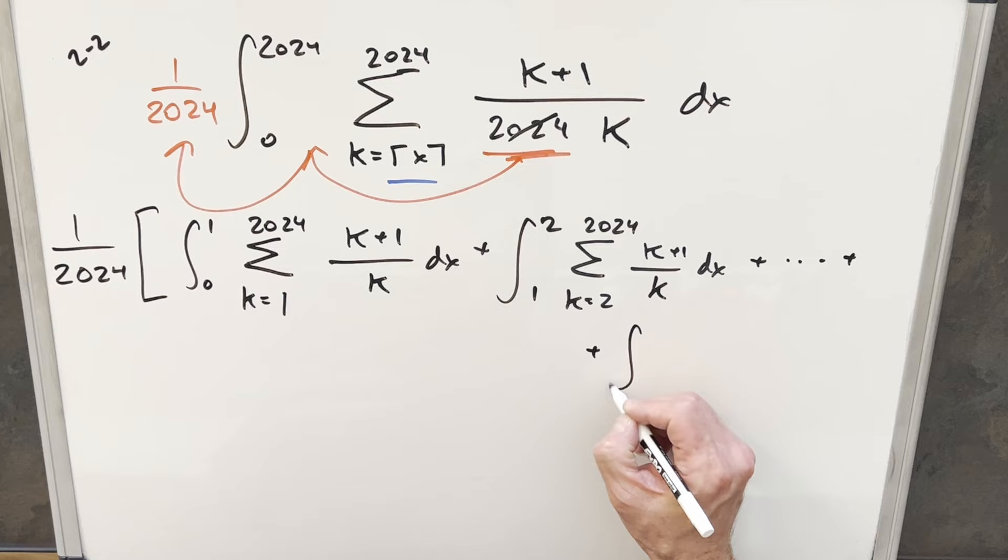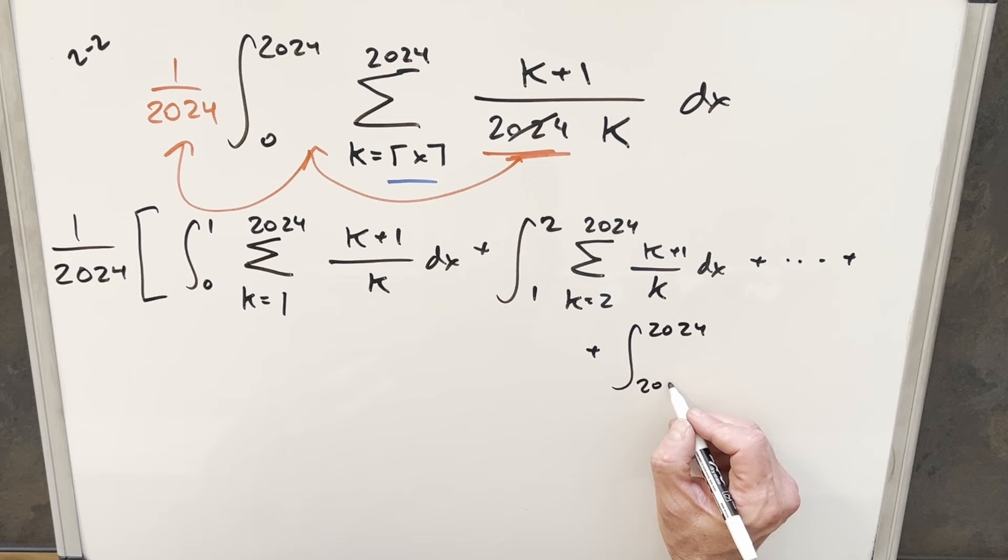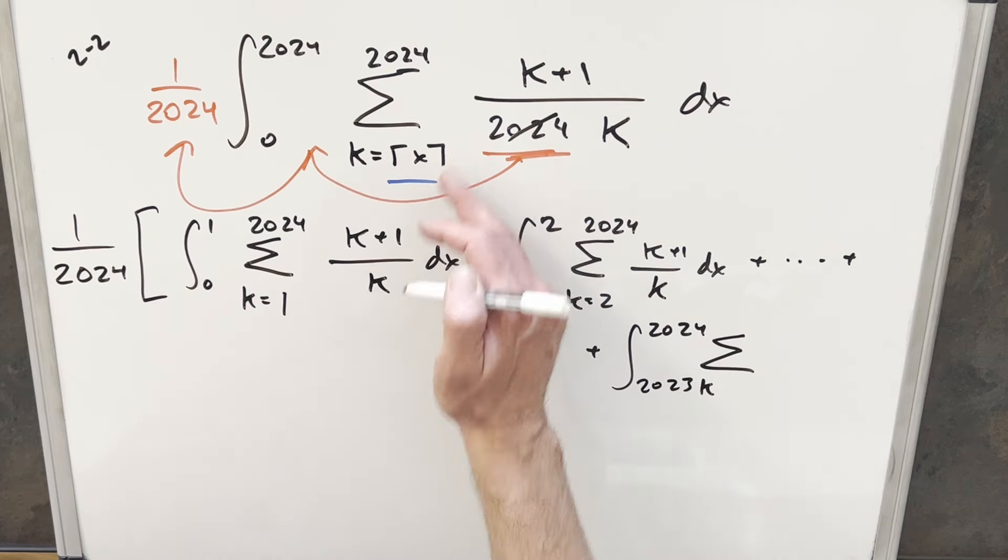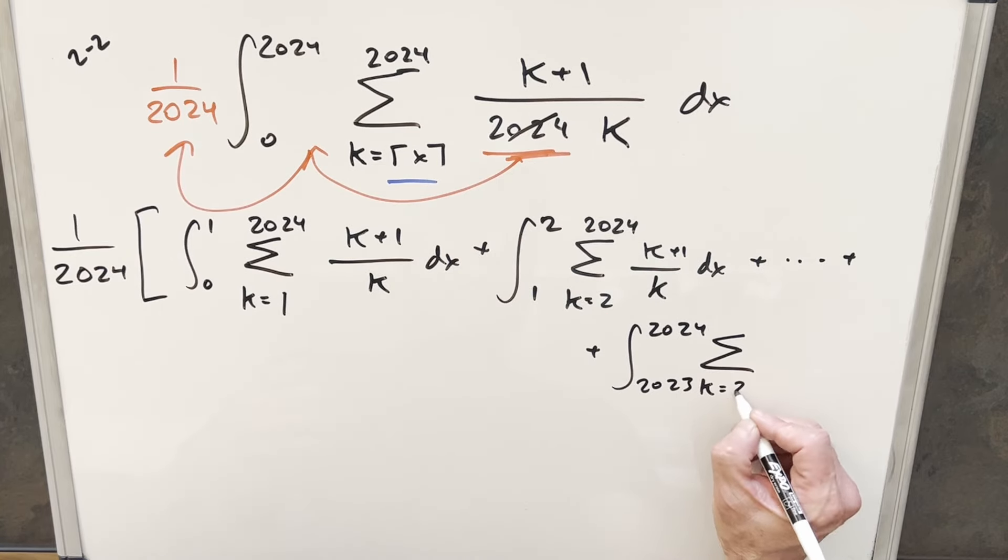So for this last integral here, our upper bound is going to be 2024. So this is going to be one less, or 2023. Now here for this k value, all of our x values between 2023 and 2024, the ceiling is going to round us up. So this is just going to be 2024.